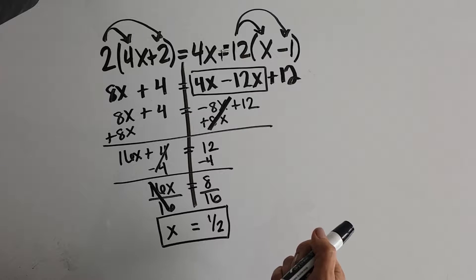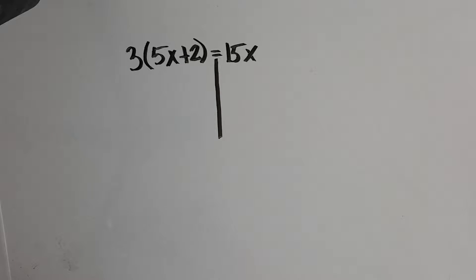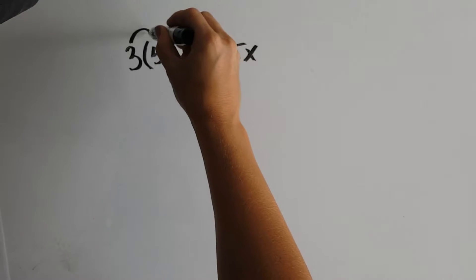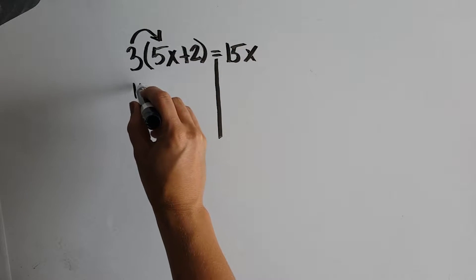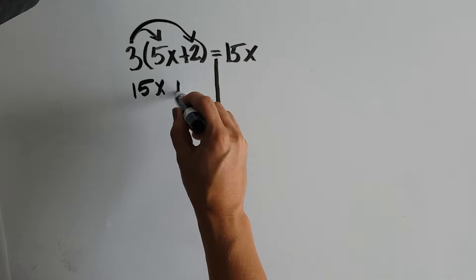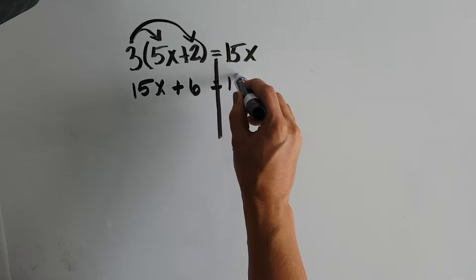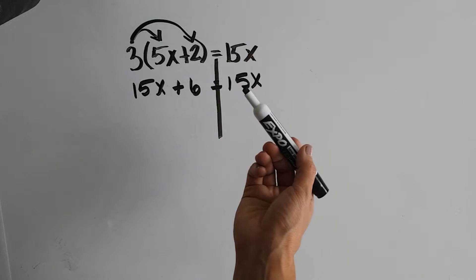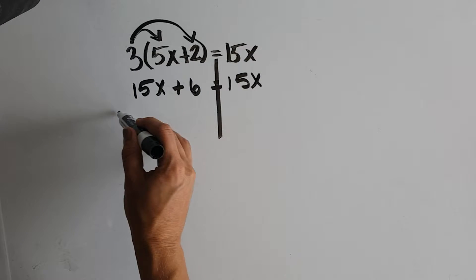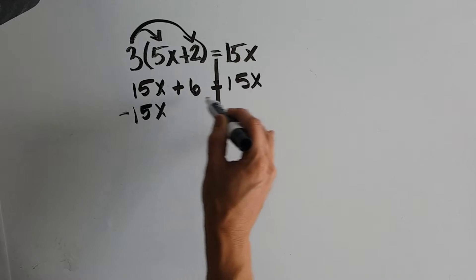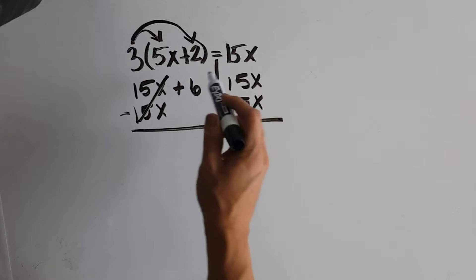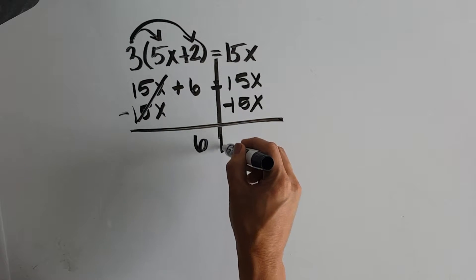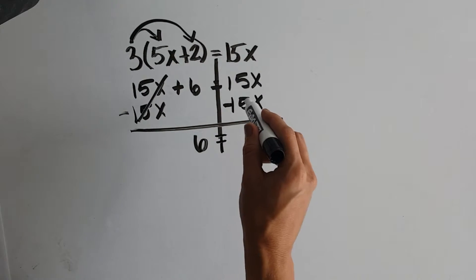So now the last thing we want to talk about are some special cases. So we start this problem like normal. Simplify each side of our equation. So we're going to distribute this 3 on the left side. We get 15x plus 6 equals 15x. Step 2 says get all of your variable terms together. Okay, I'm going to put these guys over there. So we subtract 15x from both sides. 15x minus 15x is 0. Plus 6 is just 6. And then 15x minus 15x is 0.